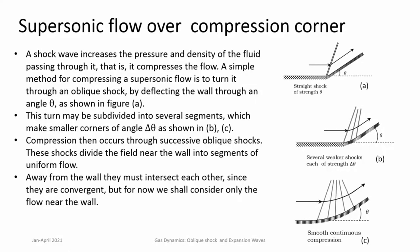We saw all this in the previous class. The counterpart is when the flow turn happens away from the mainstream — how do we analyze those flow features? We saw that you get expansion waves or an expansion fan. To analyze expansion fans, we begin with the flow undergoing a gradual turn towards itself and understand what happens as the oblique shock becomes weak.